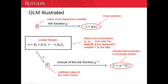The third step is to get the value of the dependent variable by inverting the transformed dependent variable. The transformed dependent variable is called the linear predictor.